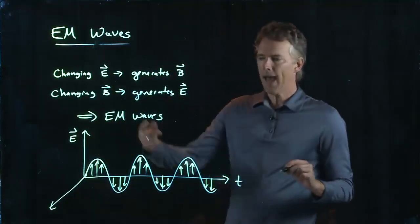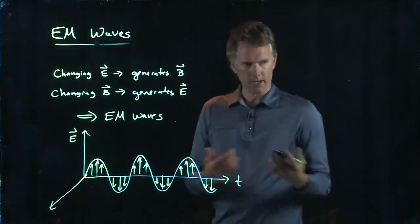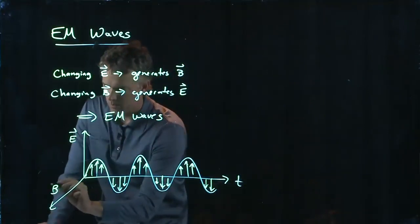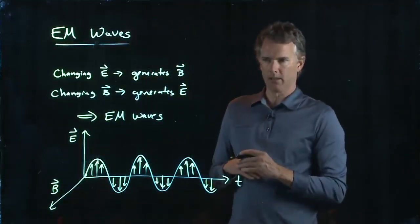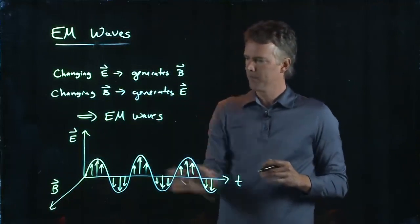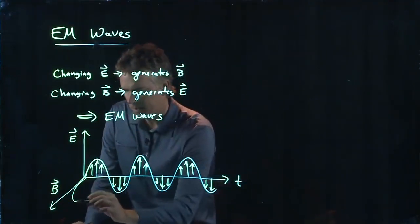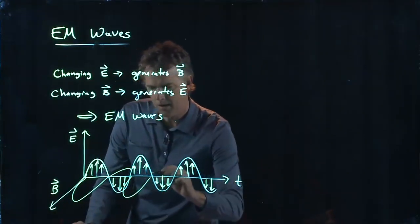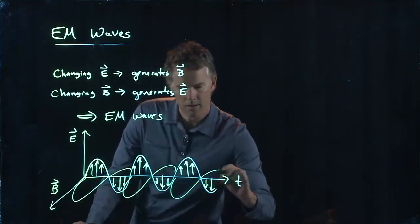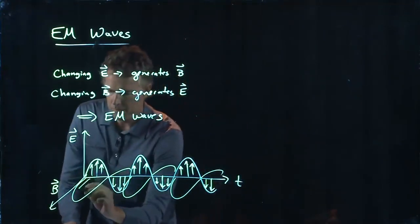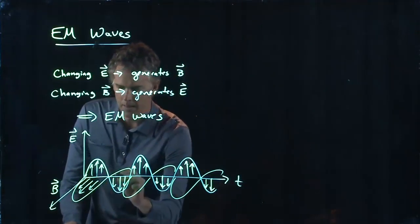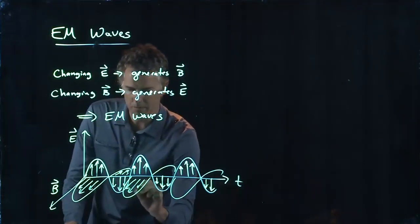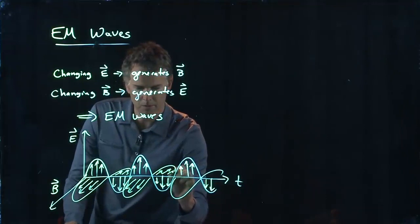But that changing E field can generate a changing B field. The B field is orthogonal to that—at a 90-degree angle. So if E is up and down in the plane of the board, then B is going in and out of the board. This is a little hard to draw, but B is pointing this way, then into the board, out of the board, into the board, and so on.